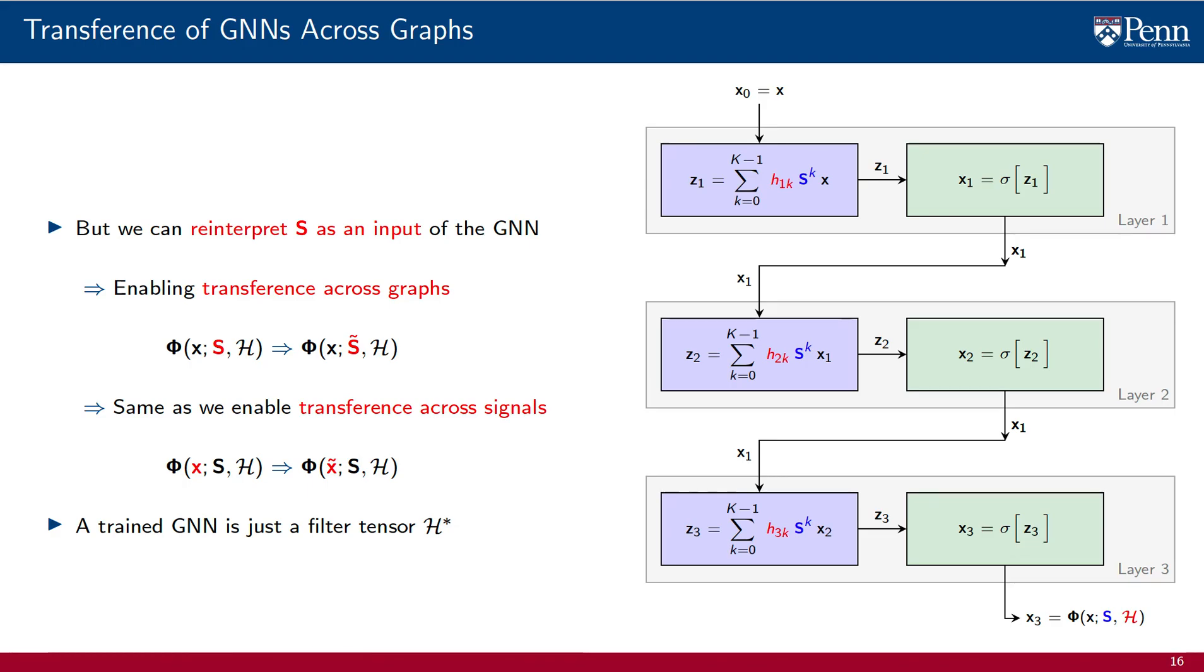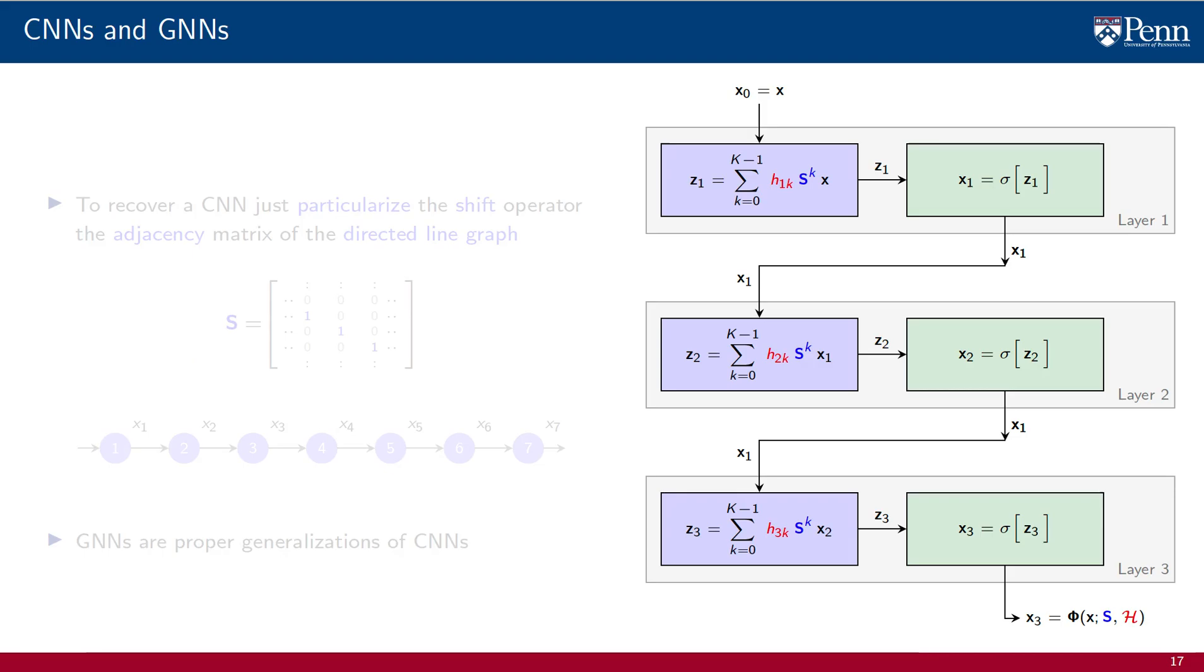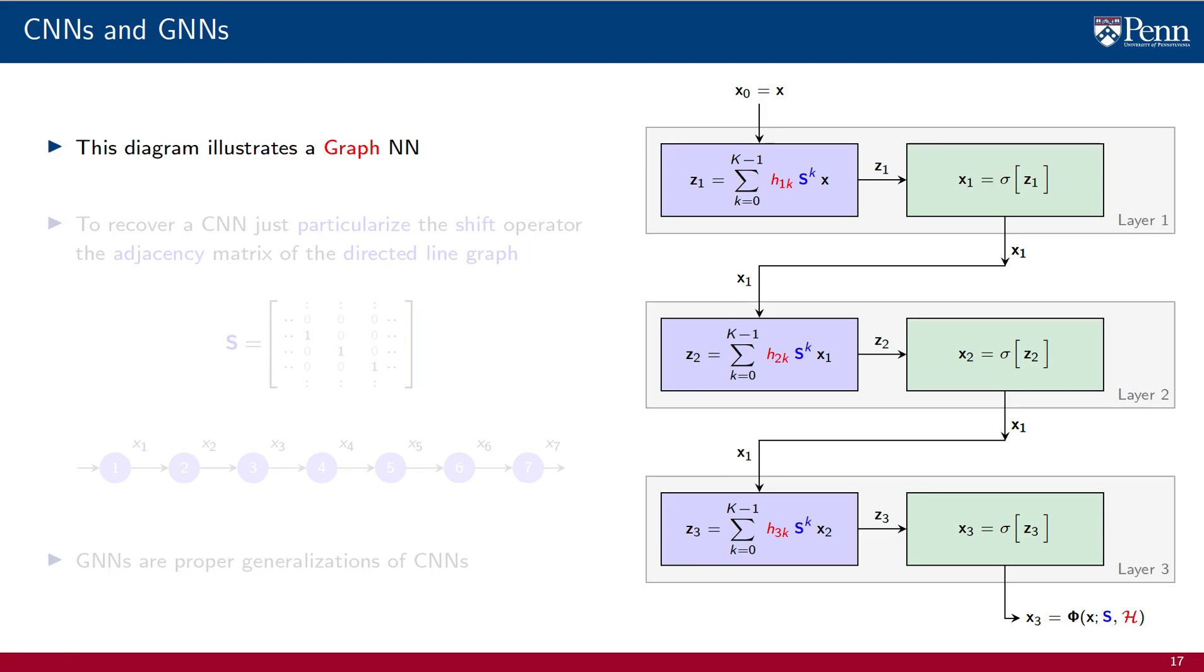But the reviewers of your papers may disagree, and there really is no cost in using standard language. The final point that I want to illustrate has to do with the relationship between CNNs and GNNs. This diagram illustrates a GNN, a graph neural network.